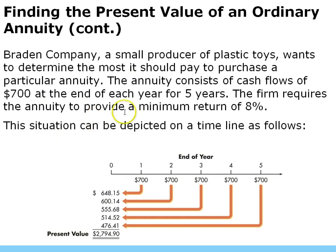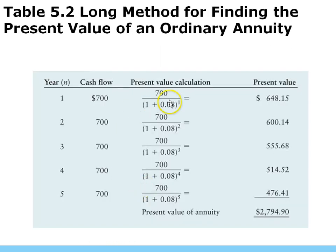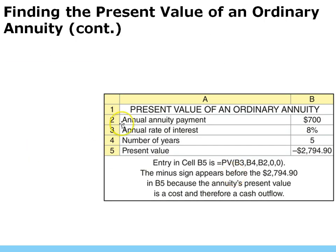Here's the example: a small producer of plastic toys wants to determine the most it should pay for a particular annuity. The annuity consists of cash flows of $700 every year for five years at a discount rate of 8%. In year five, the money gets discounted the most because it's furthest away — it discounts down to about $400 — while the year one amount discounts to about $650. Adding up all years individually we get $2,794. Even though five times $700 equals $3,500, discounting brings it down to about $2,800.